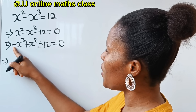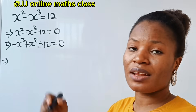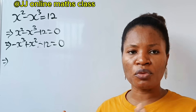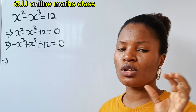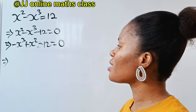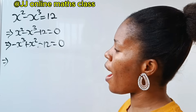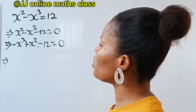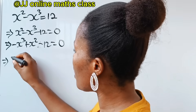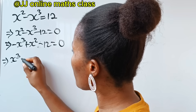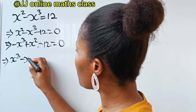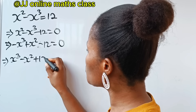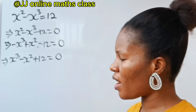This implies that we have a minus sign at the beginning of the equation. Let's try and remove the minus sign. The only way to do that is if we multiply through by minus 1. So if we do that, we are going to have x to the power of 3 minus x squared plus 12 is equal to 0.